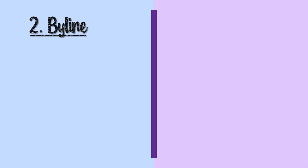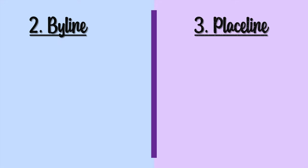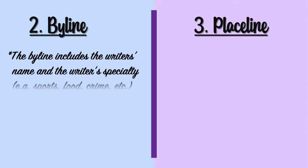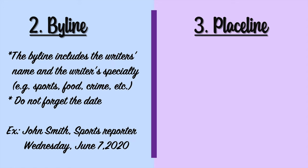Then we have the byline and the place line. The byline includes the writer's name and the writer's speciality — for example: sports, food, crime, etc. Do not forget the date here. Example: John Smith, sports reporter. Date: Wednesday, June the 7th, 2020.